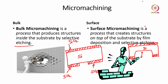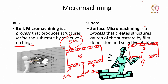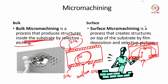Now, dip this wafer into KOH or TMAH for wet etching. Silicon will start etching while oxide will not etch, or will etch at an extremely low rate compared to silicon, giving us the diaphragm. How thin your diaphragm should be depends on how long you etch the wafer. By removing bulk of the silicon wafer through the substrate using this technique, we are performing bulk micromachining.